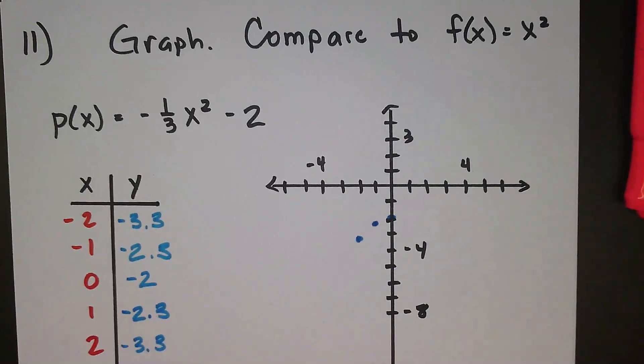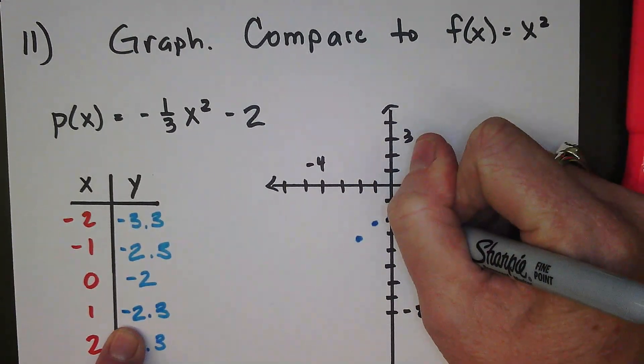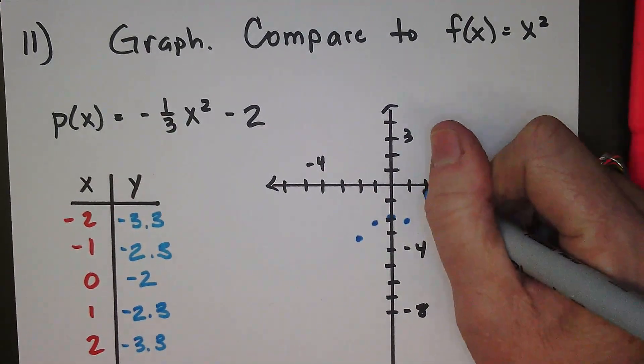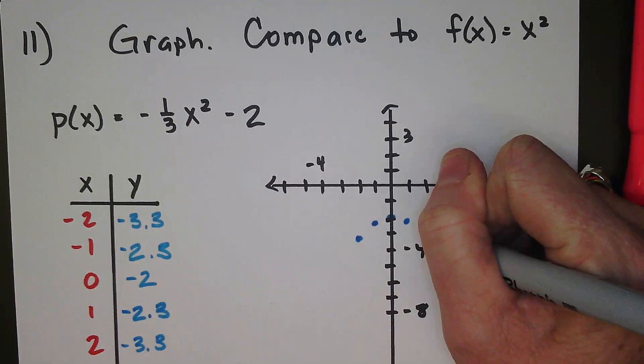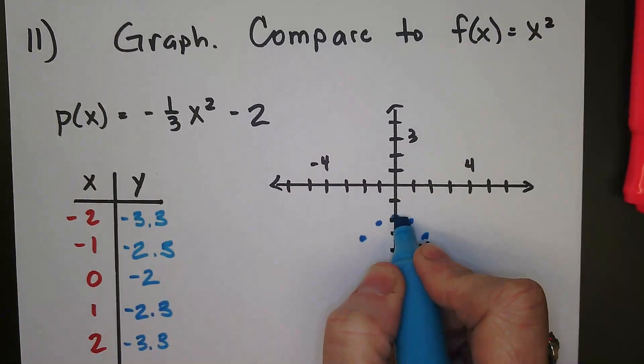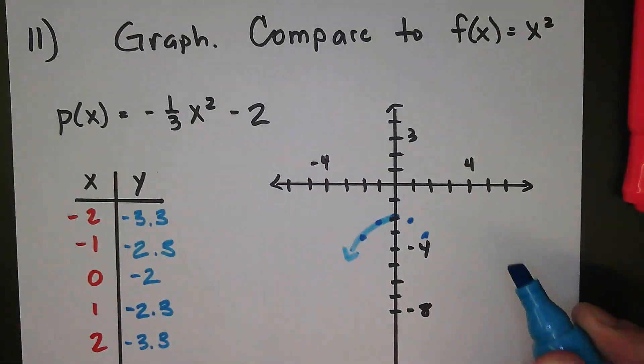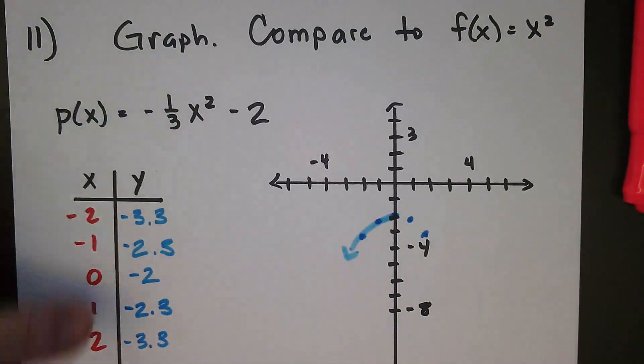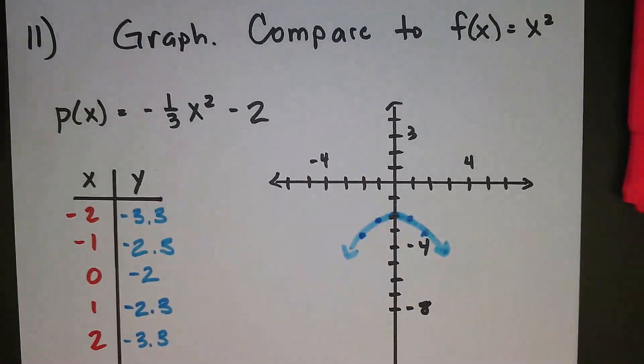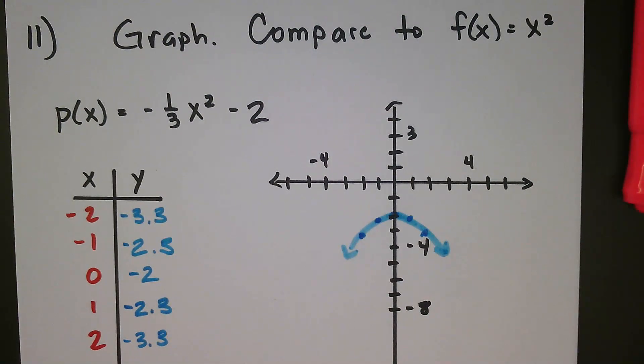At negative 1, let's see, I'm down 1, 2 and a third. And at 0, I'm at exactly negative 2. At 1, I'm at negative 2 and a third, so just a little bit below negative 2. And then I'm here at negative 3, negative 3 and a third. So those are my points, about as accurately as I can draw. You don't really get them on as perfectly when they are decimal values and you're graphing by hand, but we just want to make an attempt at as accurate as possible.